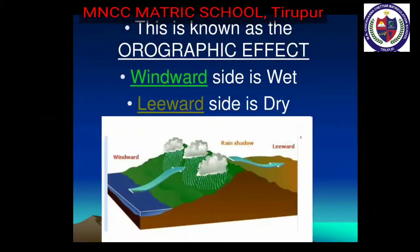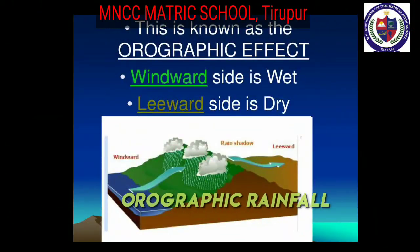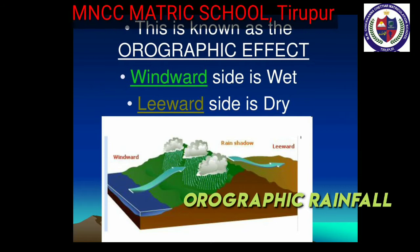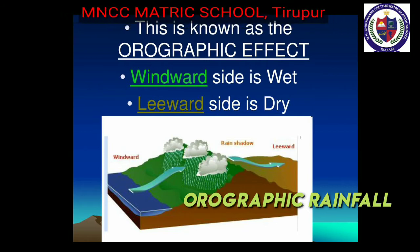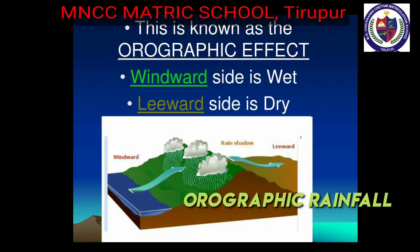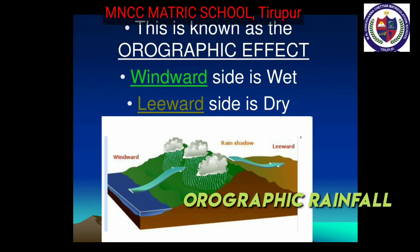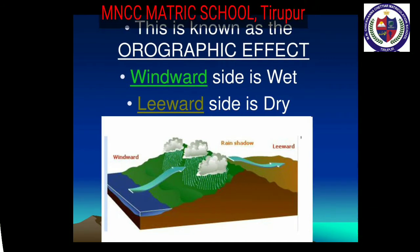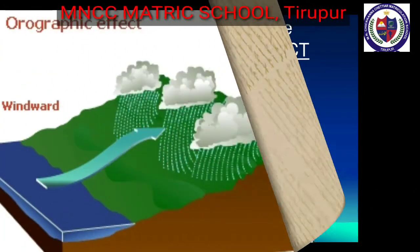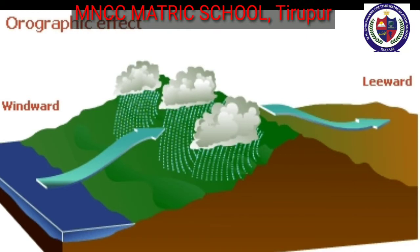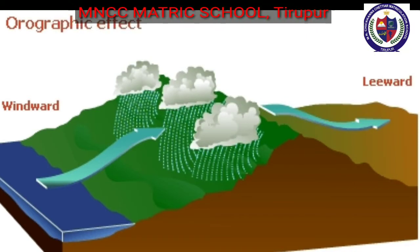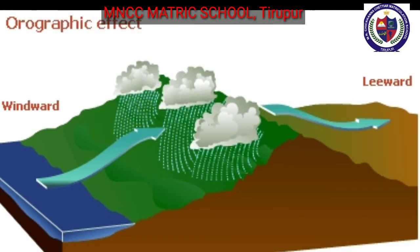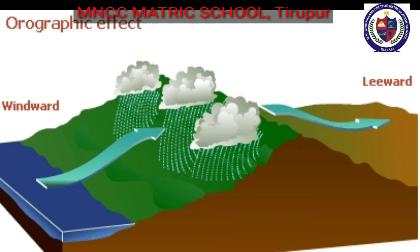Orographic rainfall: the monsoon winds climb above the mountains, which increases humidity and rainfall. The opposite side of the mountain area is called the rain shadow region. Heavy rainfall occurs due to the influence of the mountain.